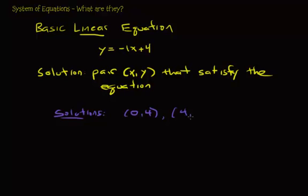How about 4 comma 0 will work when x equals 4. And you can pause and just verify these on your own. Another one could be 1 comma 3, that works. Another one could be negative 1 comma 5. Okay, these are all solutions. And again, pause it and verify.